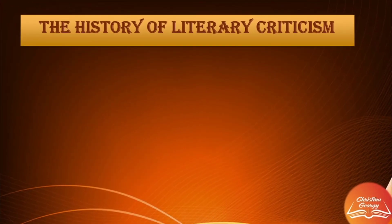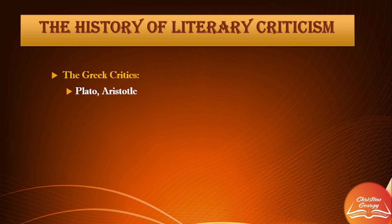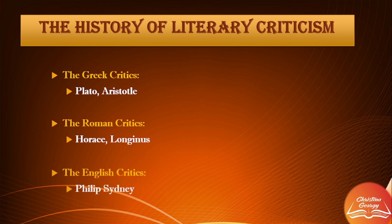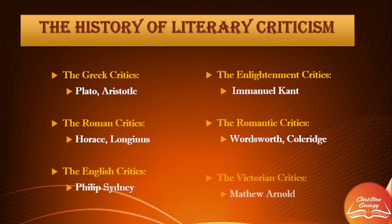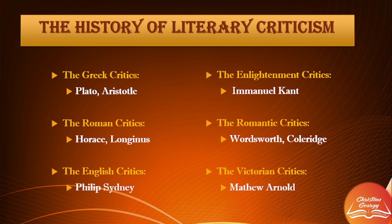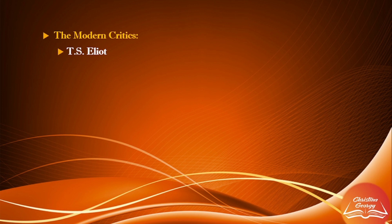Moving on to the history of literary criticism — while tracing its history, we come to the realization that it had been there ever since the classical period. During the classical period, we had Plato and Aristotle. Then came Horace and Longinus during the Roman era. Later came the English period with Philip Sidney and Enlightenment critics such as Immanuel Kant. Then came the Romantic critics Wordsworth and Coleridge, and later the Victorian critics such as Matthew Arnold. Finally came the modern era, with critics like T.S. Eliot.